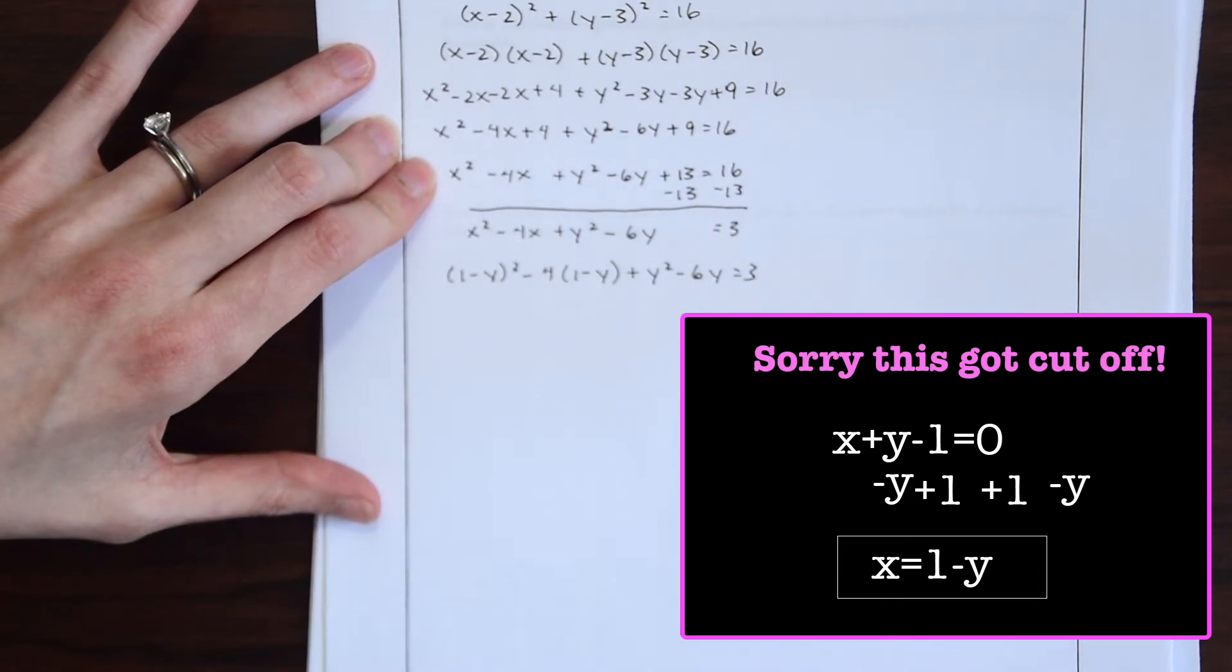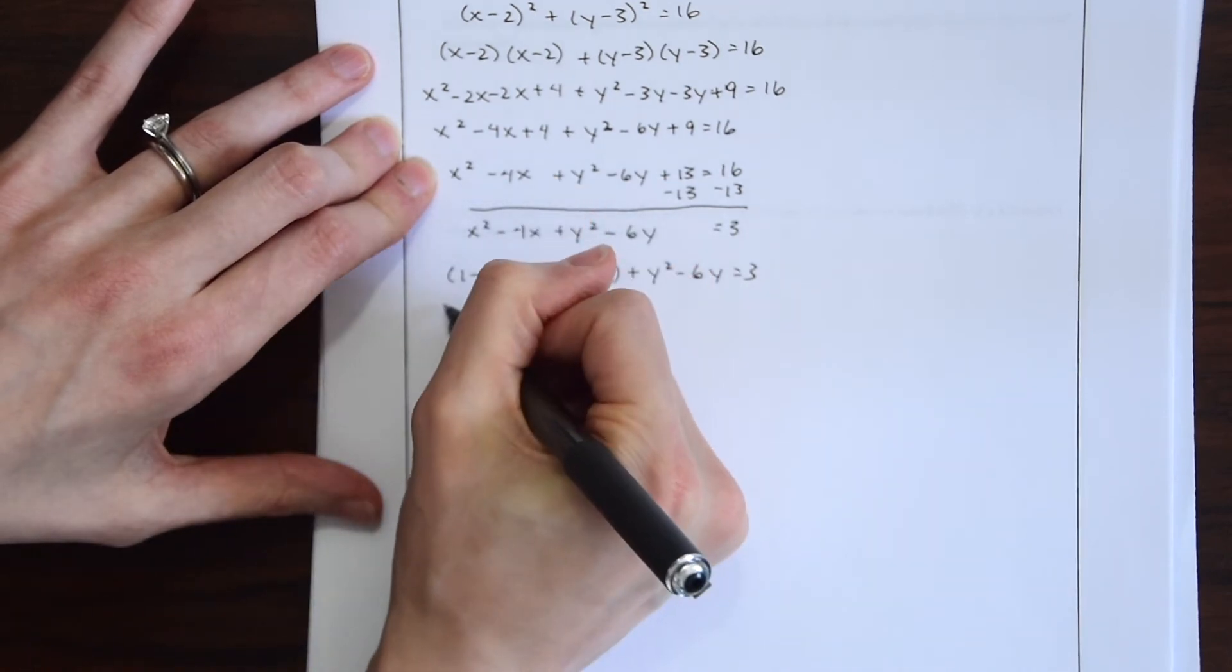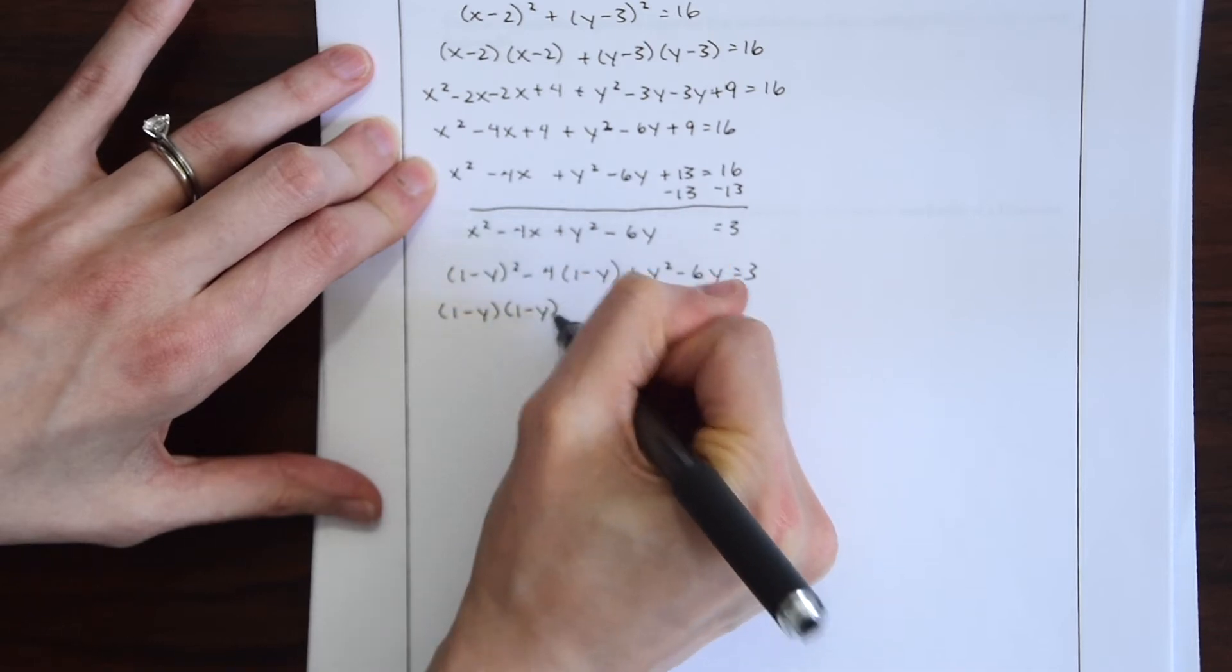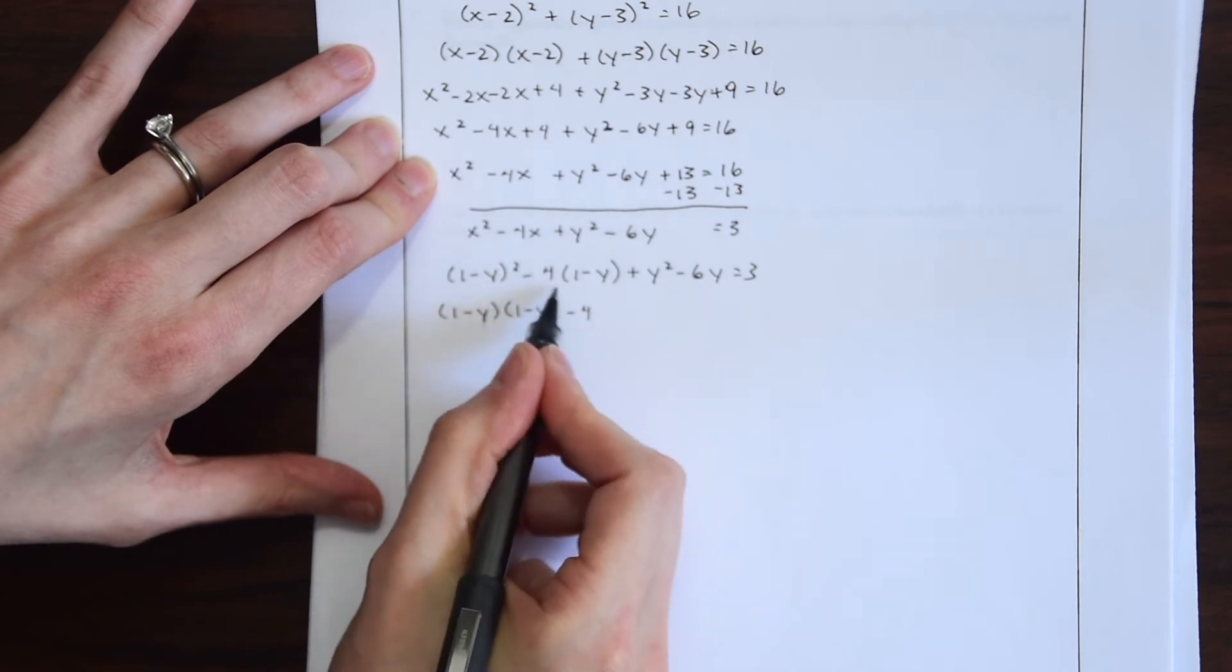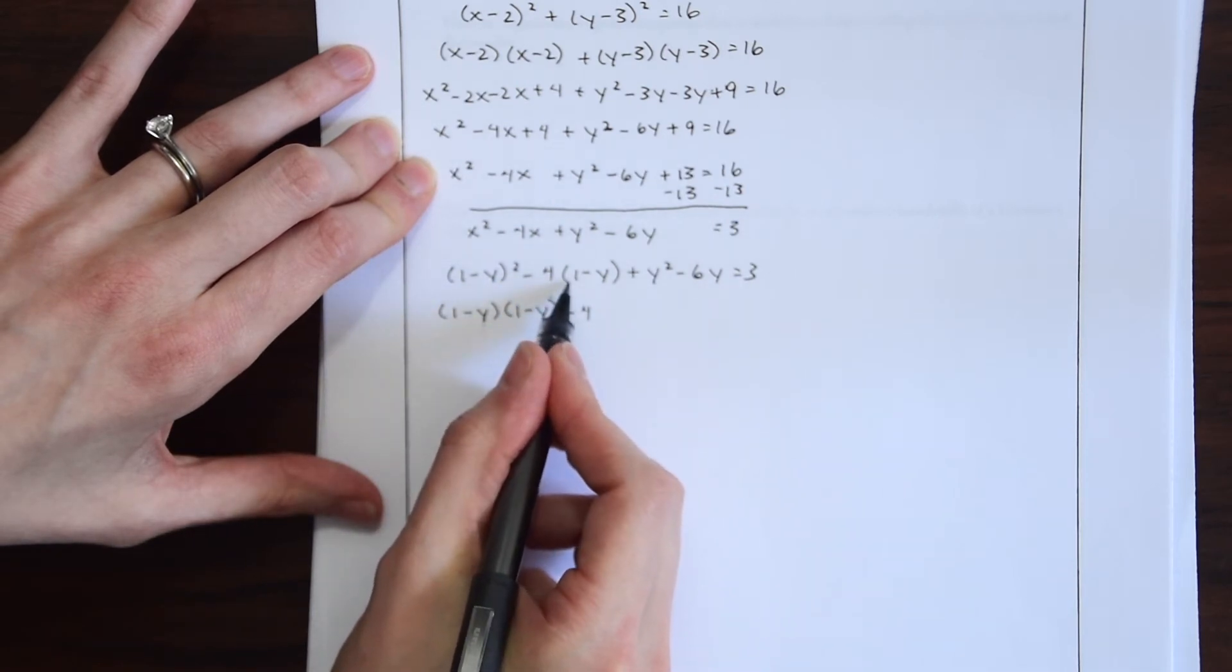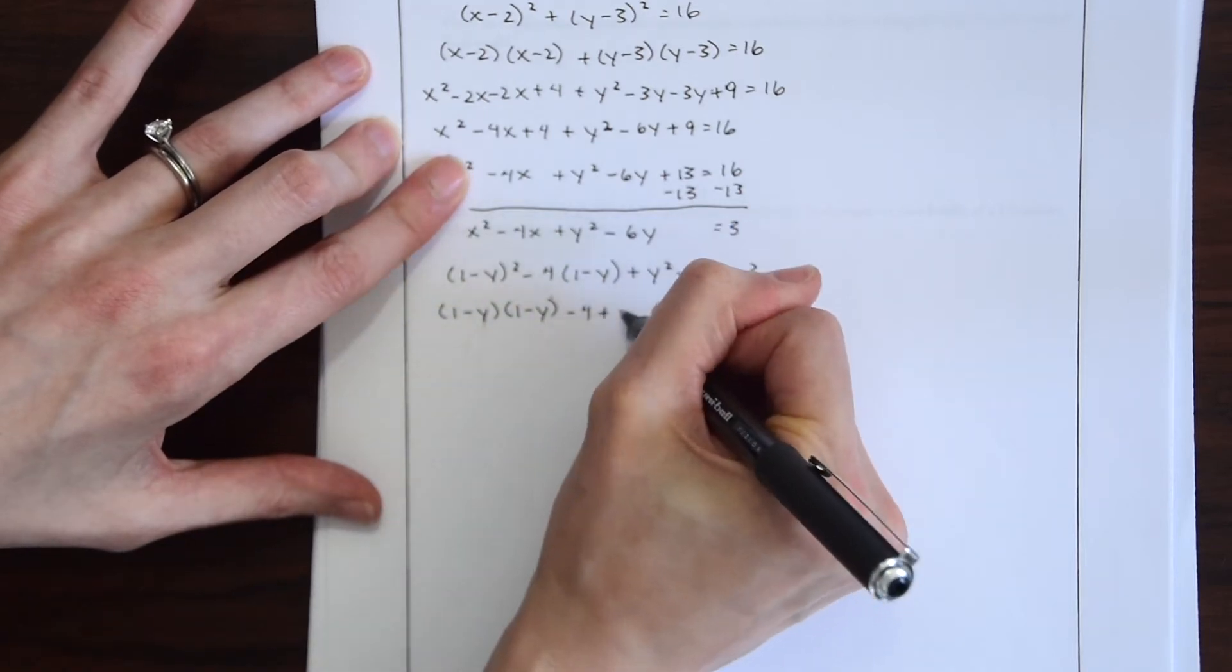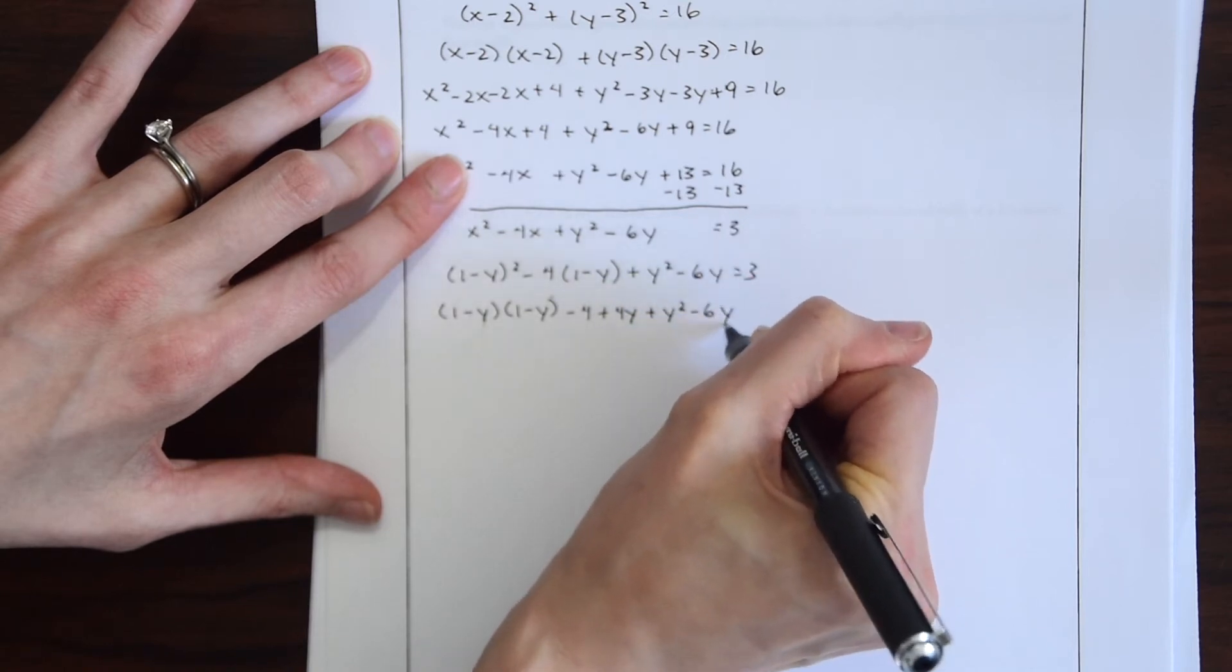So there's still more manipulating but we're getting closer. So we're expanding this binomial and then just moving this all down. So actually we could distribute this negative 4 times 1 plus minus 4 and then negative 4 times negative y will get this plus 4y plus y squared minus 6y equals 3.